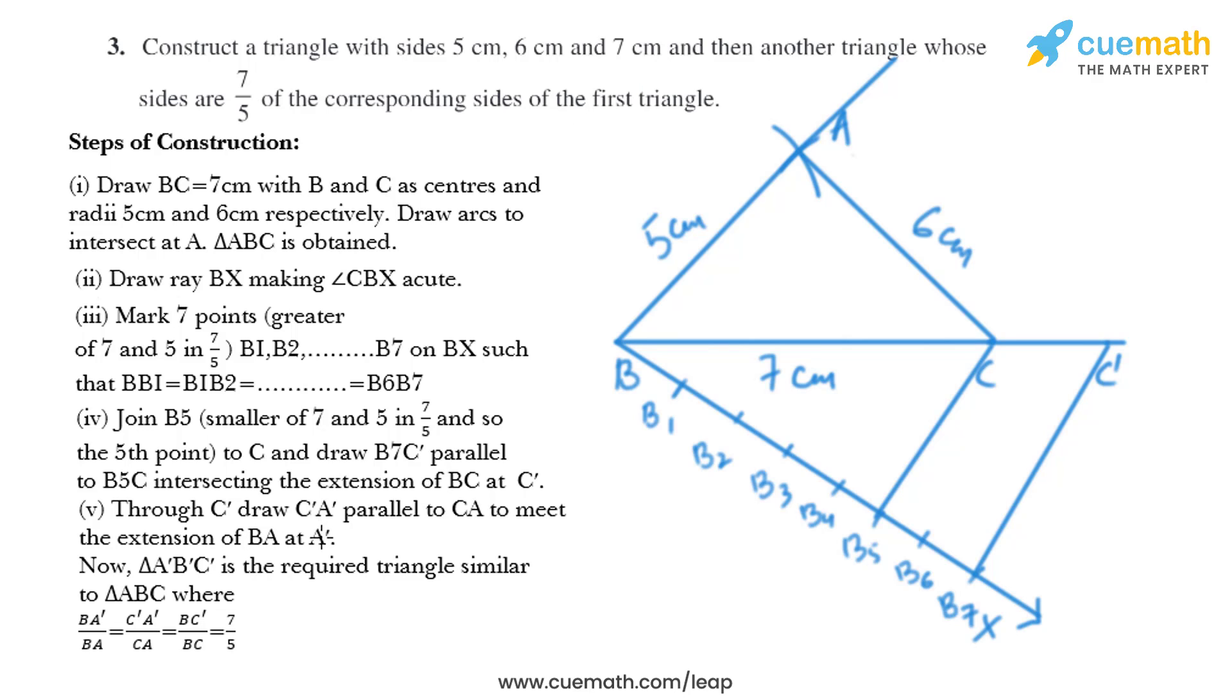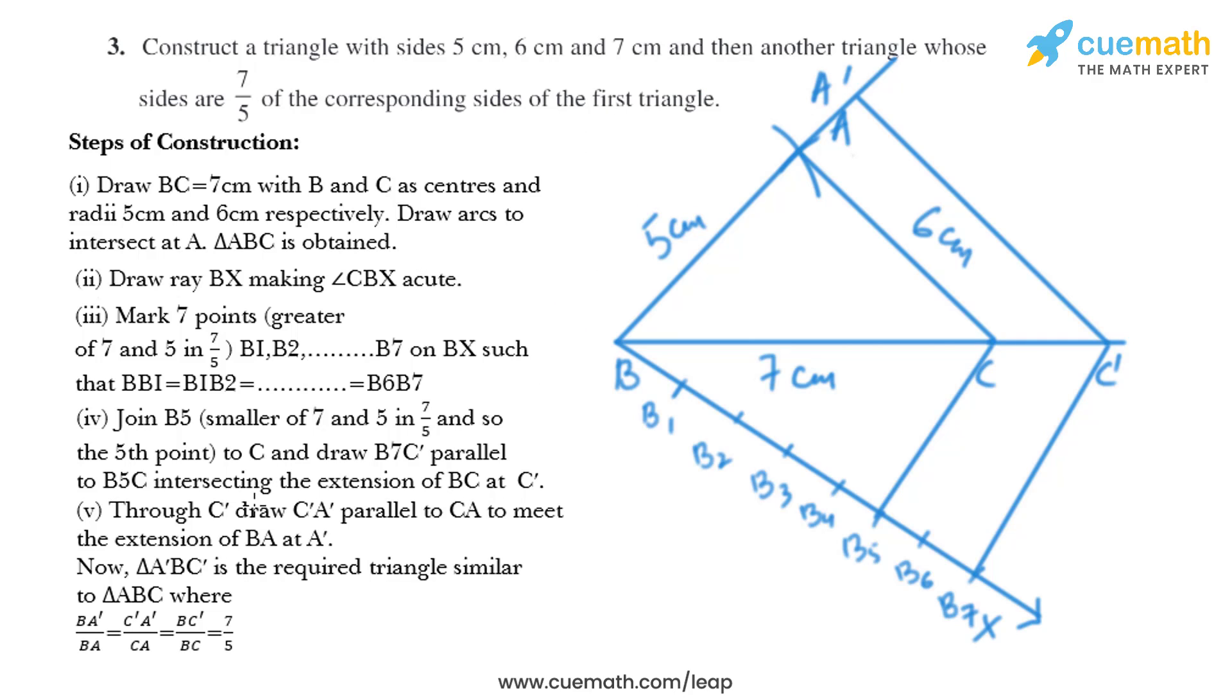Then in the next step through C dash draw C dash A dash parallel to CA to meet the extension of AB at A dash. So we'll draw a line parallel to AC and mark the point of intersection as A dash.